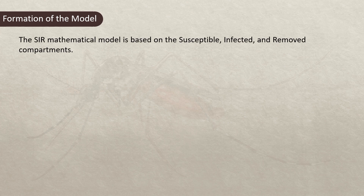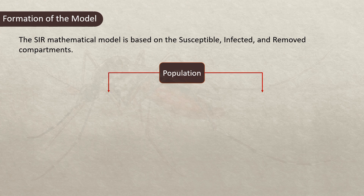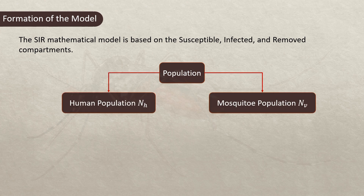The SIR mathematical model is based on the susceptible, infected, and removed compartments. The SIR model identifies two populations: the human population, denoted by N sub h, and the vector population, denoted by N sub v.